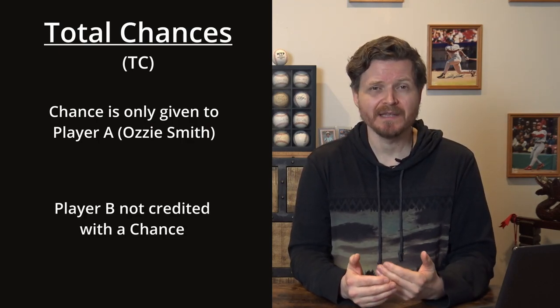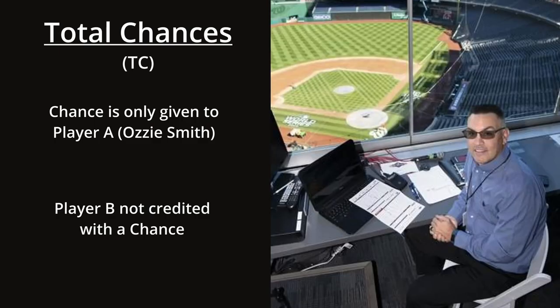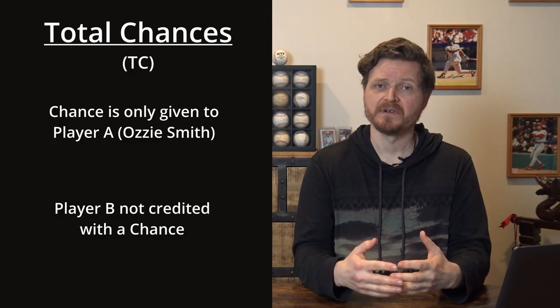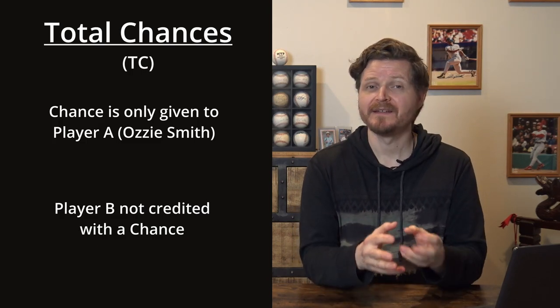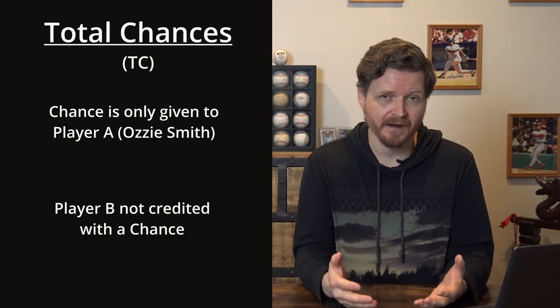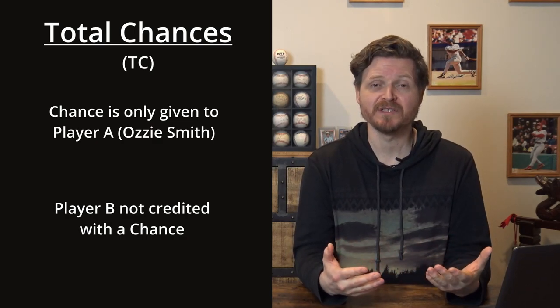This is where judgment comes into defensive stats, and that judgment belongs to the official scorer — a person who sits up in the press box to watch the whole game and keep track of what happens. They don't make on-field decisions like the umpire; instead, it's their job to watch a play and then categorize it — whether it should be a hit or an error, whether a fielder should be given a chance or not.